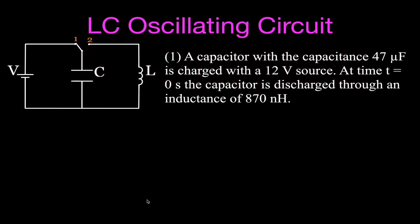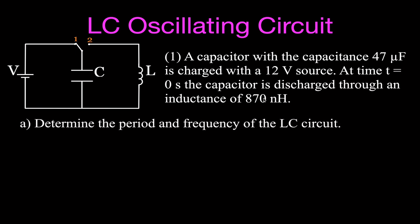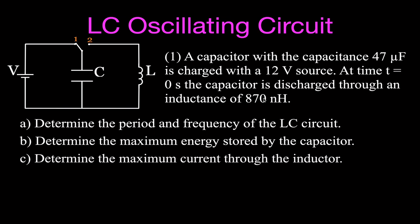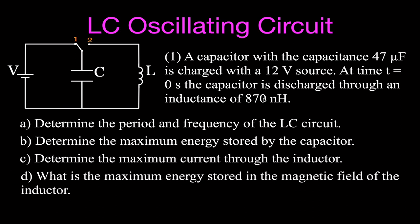This is the first problem. We have an LC oscillating circuit — it's called that because we have an inductor and a capacitor. A capacitor with a capacitance of 47 microfarads is charged with a 12-volt source, and at time zero we flip the switch so the capacitor discharges through an inductor with an inductance of 870 nanohenries. We're going to determine the period and frequency, the maximum energy in the capacitor, the maximum current through the inductor, and the maximum energy stored in the magnetic field of the inductor.